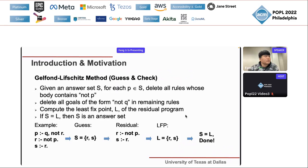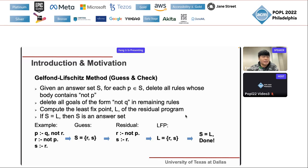There is the Gelfond-Lifschitz method, which is a guess-and-check algorithm to find the answer sets. Given a guessed answer set S, for each p in S, we delete all rules whose body contains 'not p'. Then we delete all goals of the form 'not q' in the remaining rules, and compute the least fixed point L of the residual program. If S equals L, then S is an answer set.